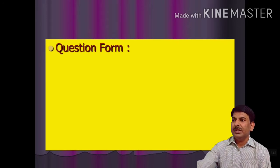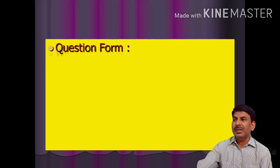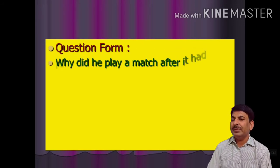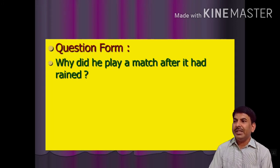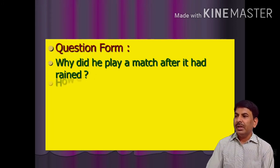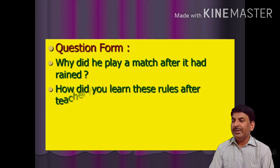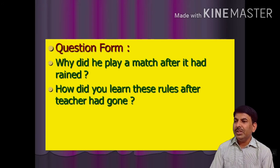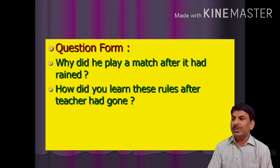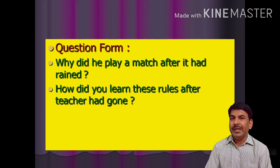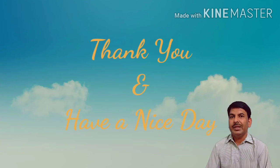In question form, question words are used at the beginning of the sentence. Example: 'Why did he play a match after it had rained?' Another example: 'How did you learn these rules after the teacher had gone?' Here the first clause belongs to simple past tense and the second clause belongs to past perfect tense. Thank you, students, and have a nice day.